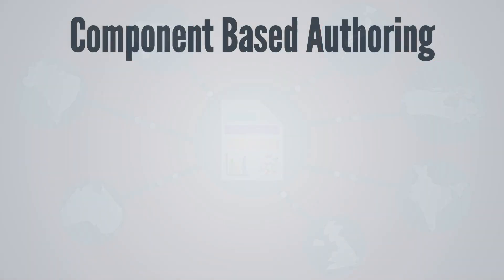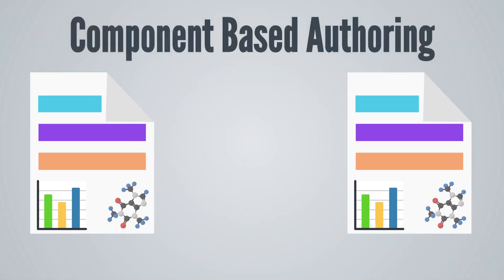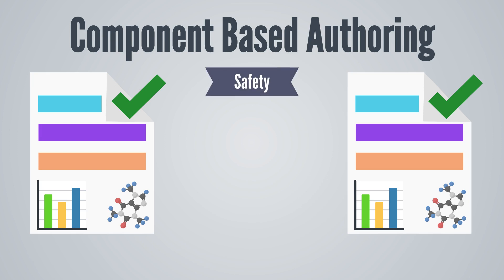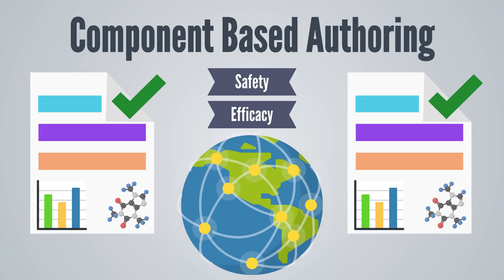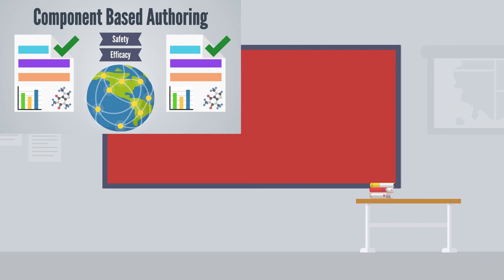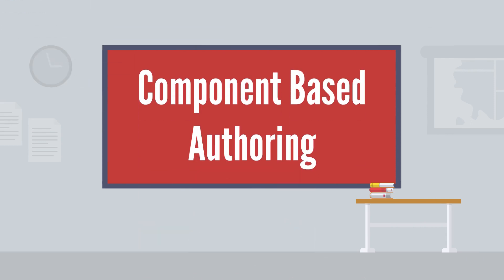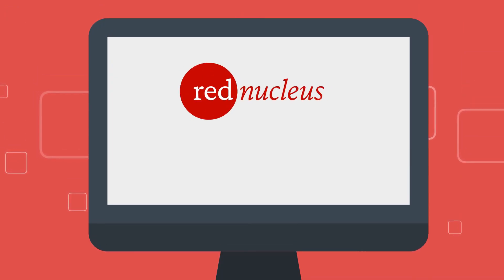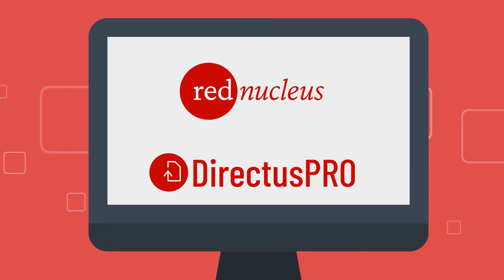With the power and efficiency of CBA, organizations can ensure consistency in labeling content, both safety and efficacy, across their marketed regions. Learn more about how CBA can transform your global labeling practices using Directus Pro. Contact us today to learn more about how Red Nucleus and Directus Pro can transform your global labeling process.